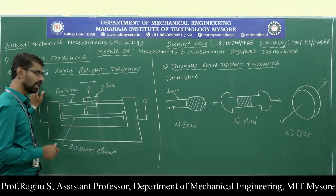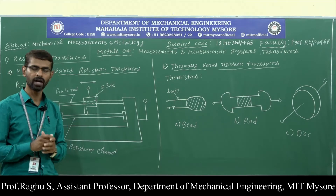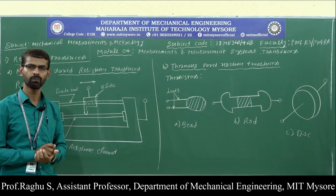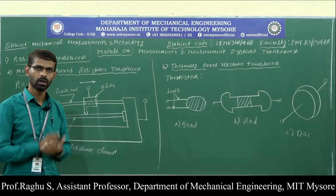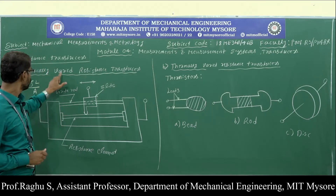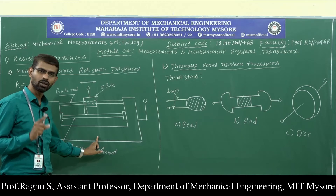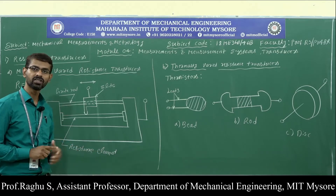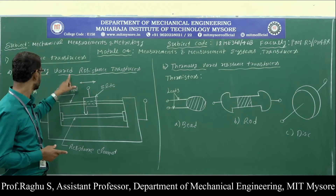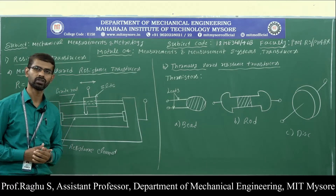The length or area may change due to application of force or pressure. Now let us discuss the mechanically varied resistance transducer. The figure shows a sliding contact resistance transducer, which is an example of a mechanically varied resistance transducer.